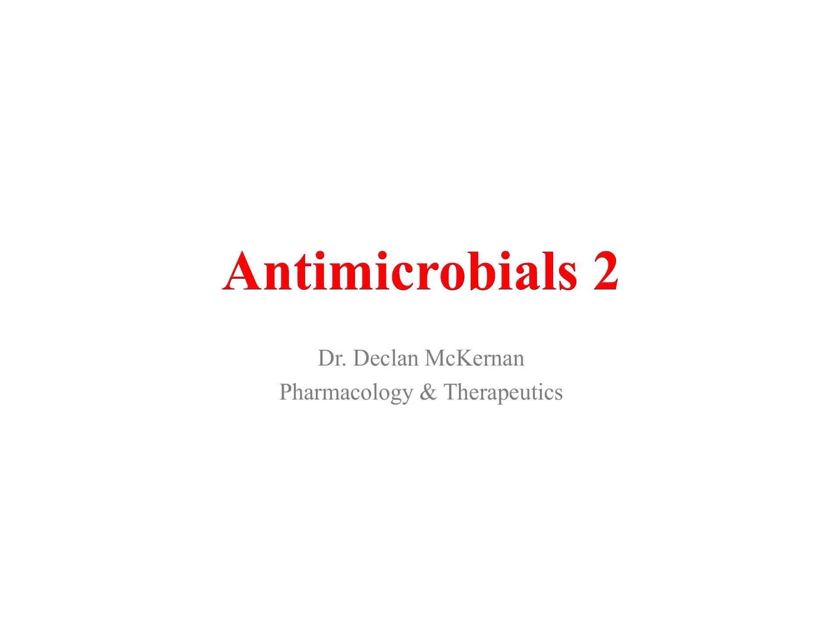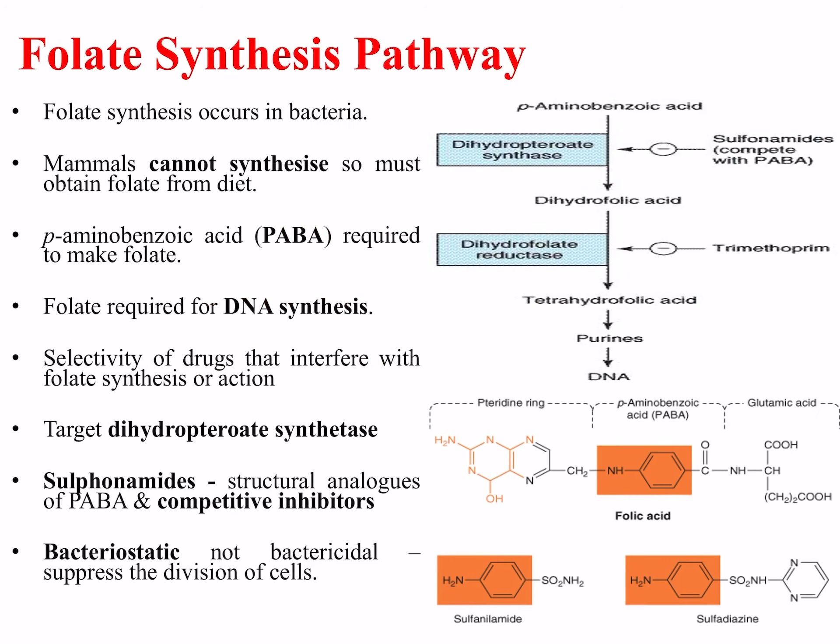In this lecture we will look at specific families of drugs and the pathways and structures they target in bacteria. The first of these pathways is folate synthesis. It occurs in bacteria but mammals cannot synthesize it and so must obtain folate from the diet. Para-amino benzoic acid, or PABA, is required to make folate, and folate is required for DNA synthesis.